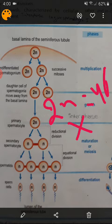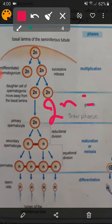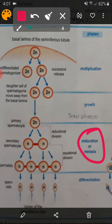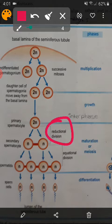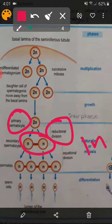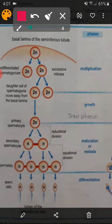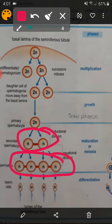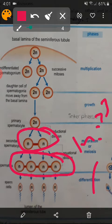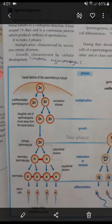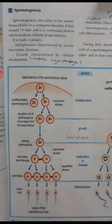Now meiosis 1 and meiosis 2 begin — together they are called maturation. When meiosis 1 (reductional division) occurs, spermatocyte 1 gives two cells called spermatocyte 2 or secondary spermatocytes, with 1N = 23 chromosomes — the number is reduced by half, and each chromosome has 2 chromatids. When meiosis 2 occurs, these 2 cells produce 4 cells called spermatids, with 1N = 23, and each chromosome is made up of one single chromatid.